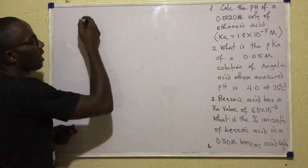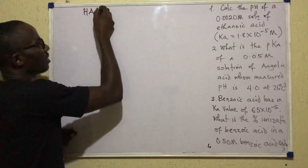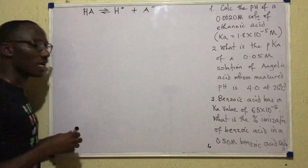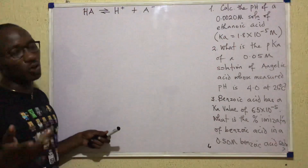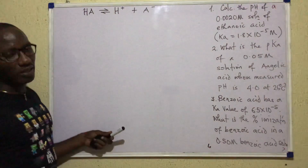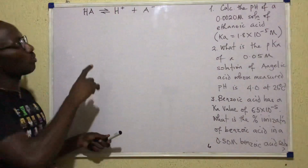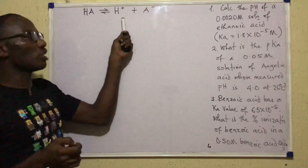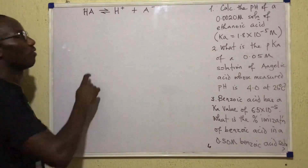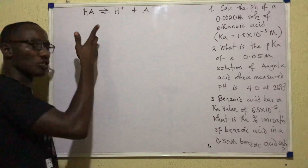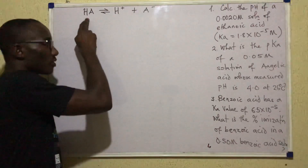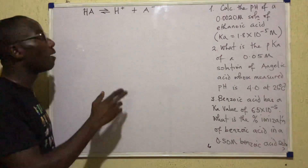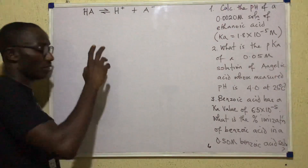Ordinarily, when an acid HA ionizes, it gives us H+ and A-. For a weak acid — an acid that does not ionize well in water — it ionizes only partially. If we put acid HA inside water, much of the acid remains as HA, and very little becomes H+ and A-. The concentration of the unionized acid will remain high, while the concentrations of the ions will be very low.